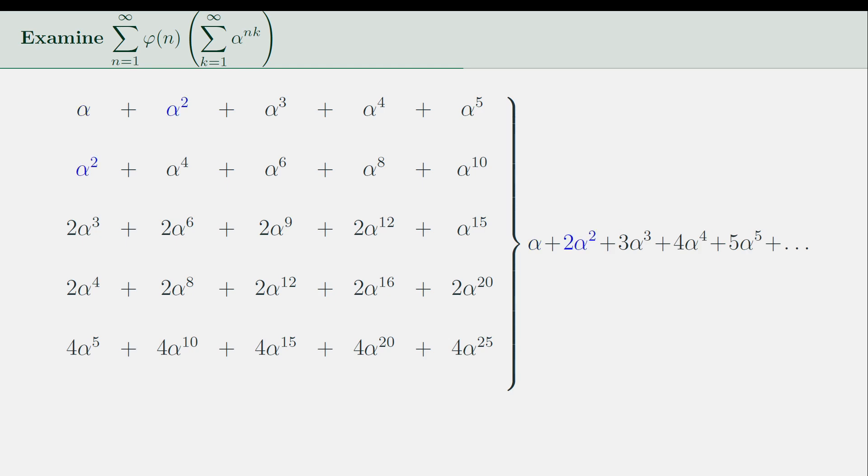α² appears in n equals 1 and n equals 2, giving a total of 2α² to the overall sum. α³ appears in n equals 1 and n equals 3, with a coefficient of 2 for n equals 3, giving a total of 3α³ in the overall sum.